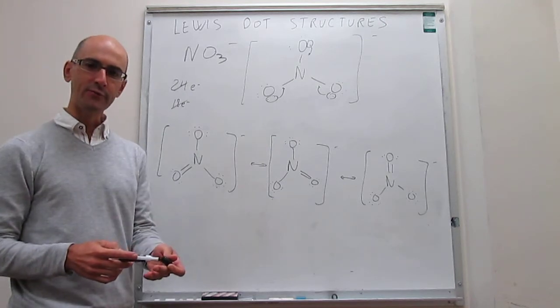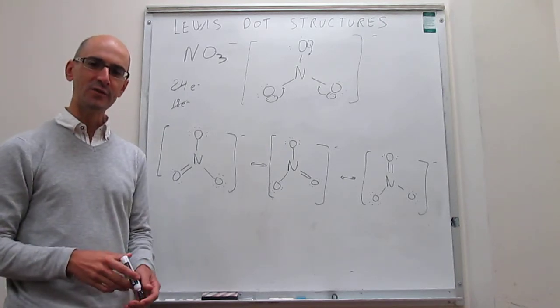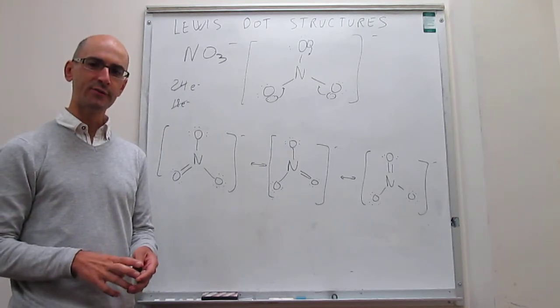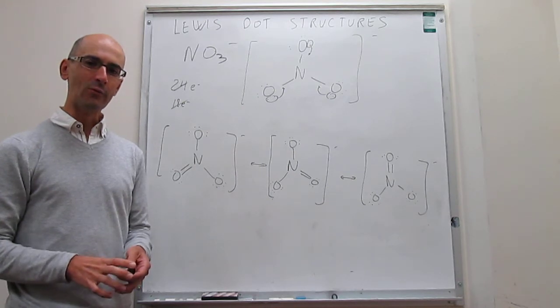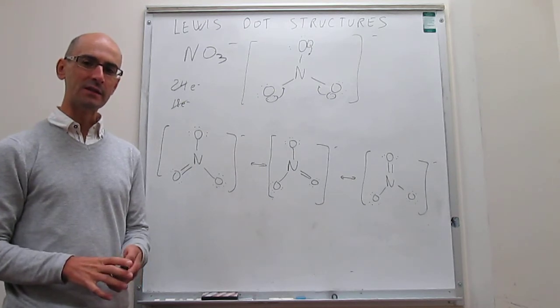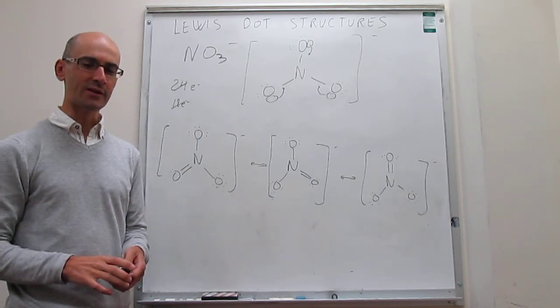So in this video we have drawn the Lewis dot structures for ozone and the nitrate ion, and we have introduced the concept of resonance structures.